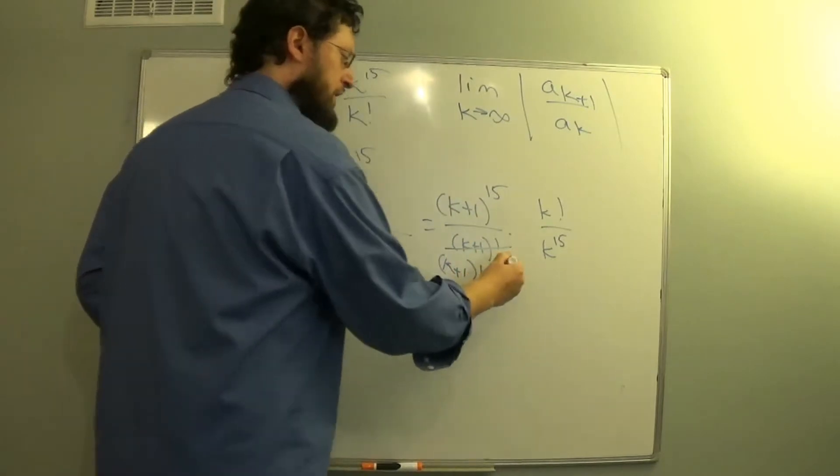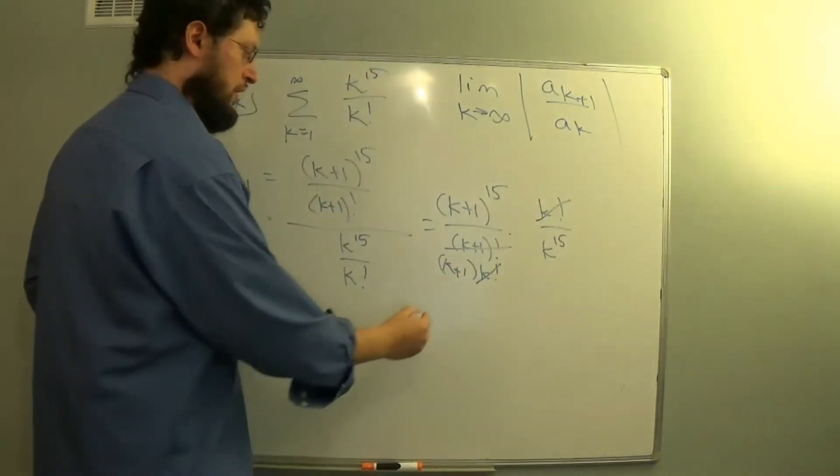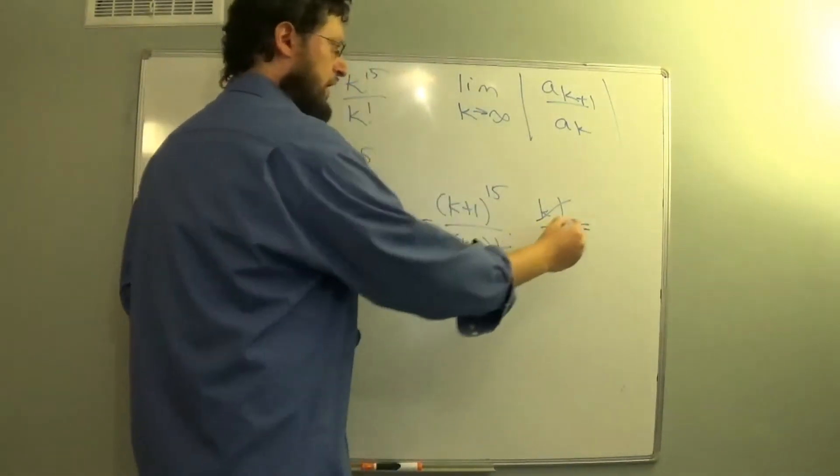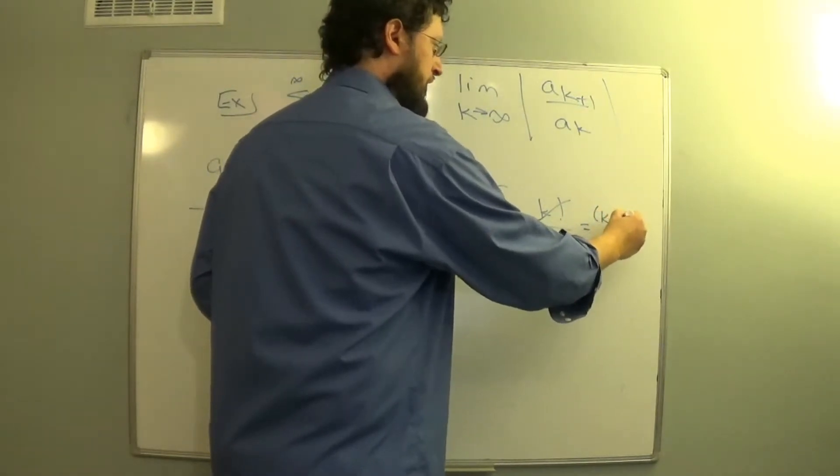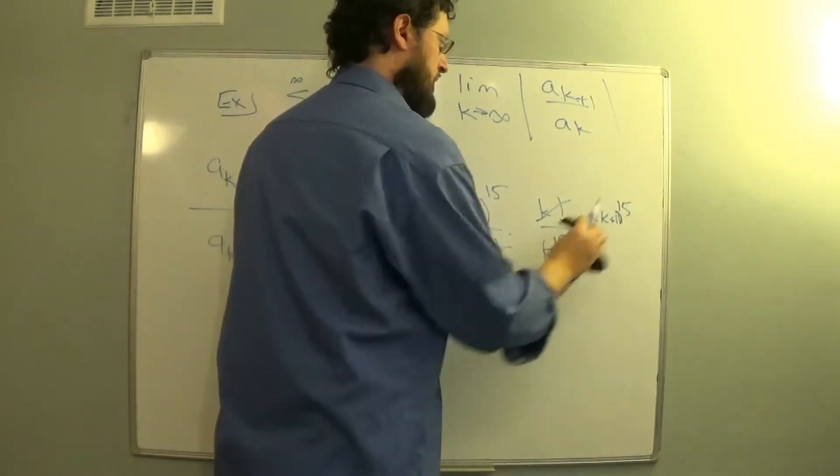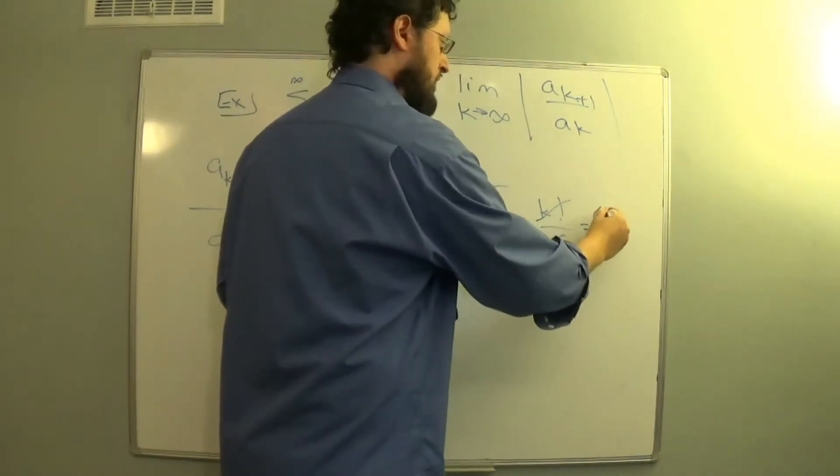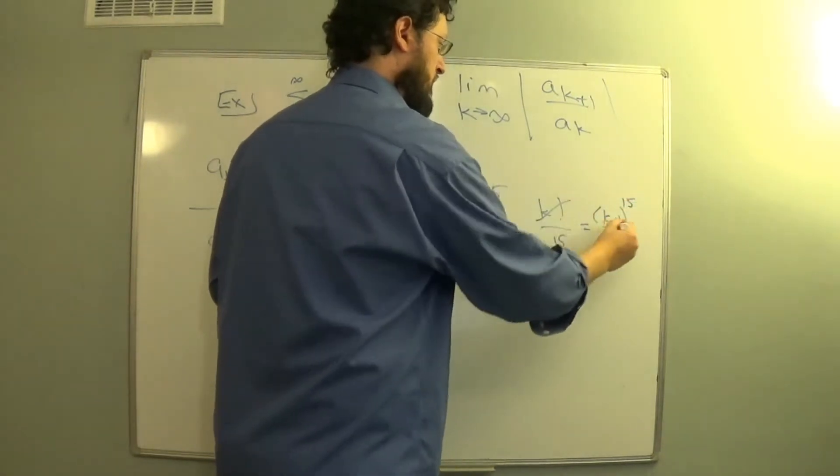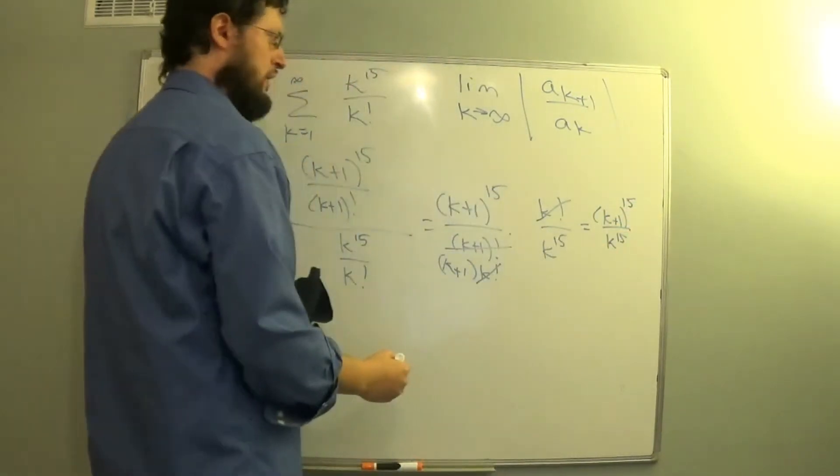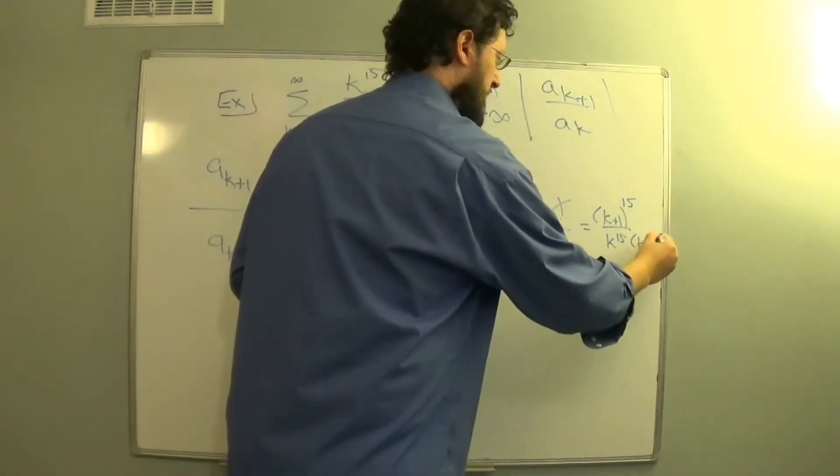And we do that so we can cancel our k factorial, which leaves us with k plus 1 to the 15 over k to the 15, with another k plus 1 in the denominator.